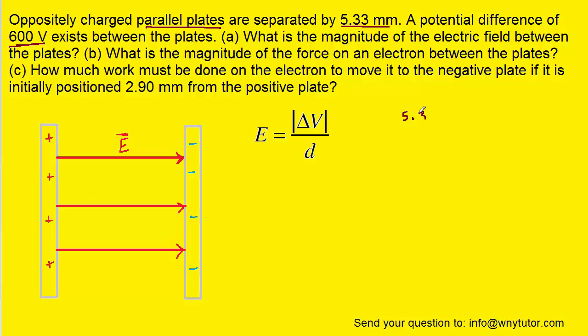Notice we have to convert that into the standard unit of meters by multiplying it by 10^-3. And when we plug in the known values, we should get approximately 1.13 × 10^5 volts per meter. That is indeed the correct answer to part A of the question.